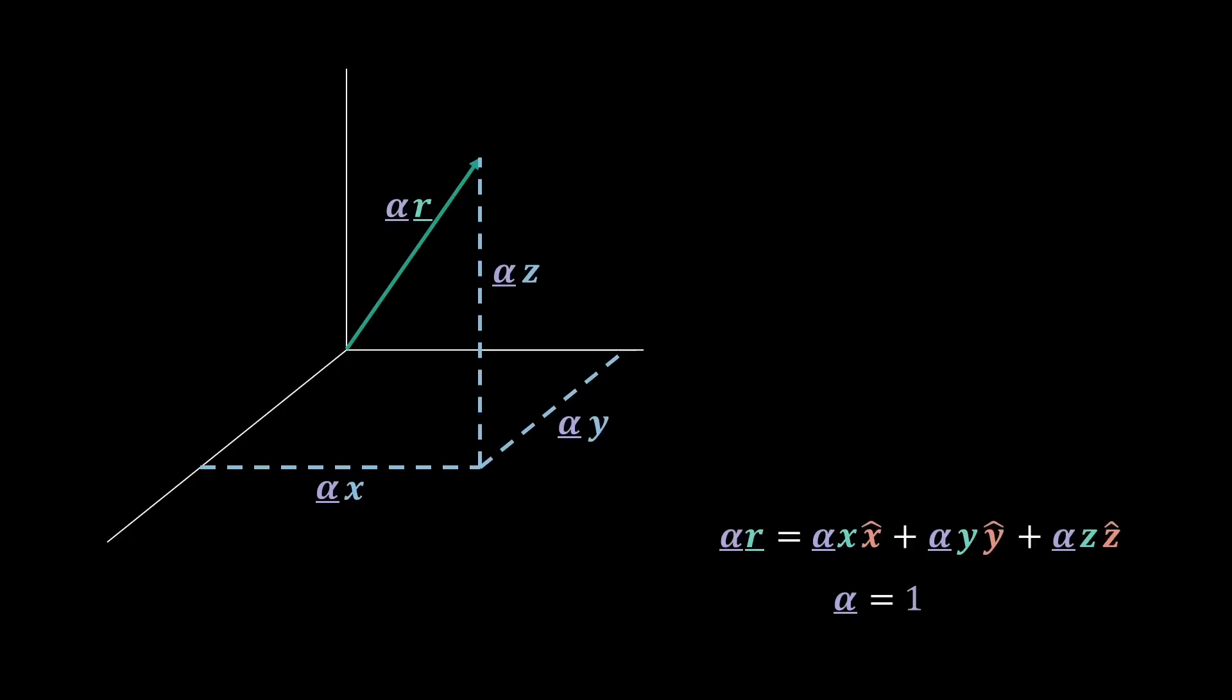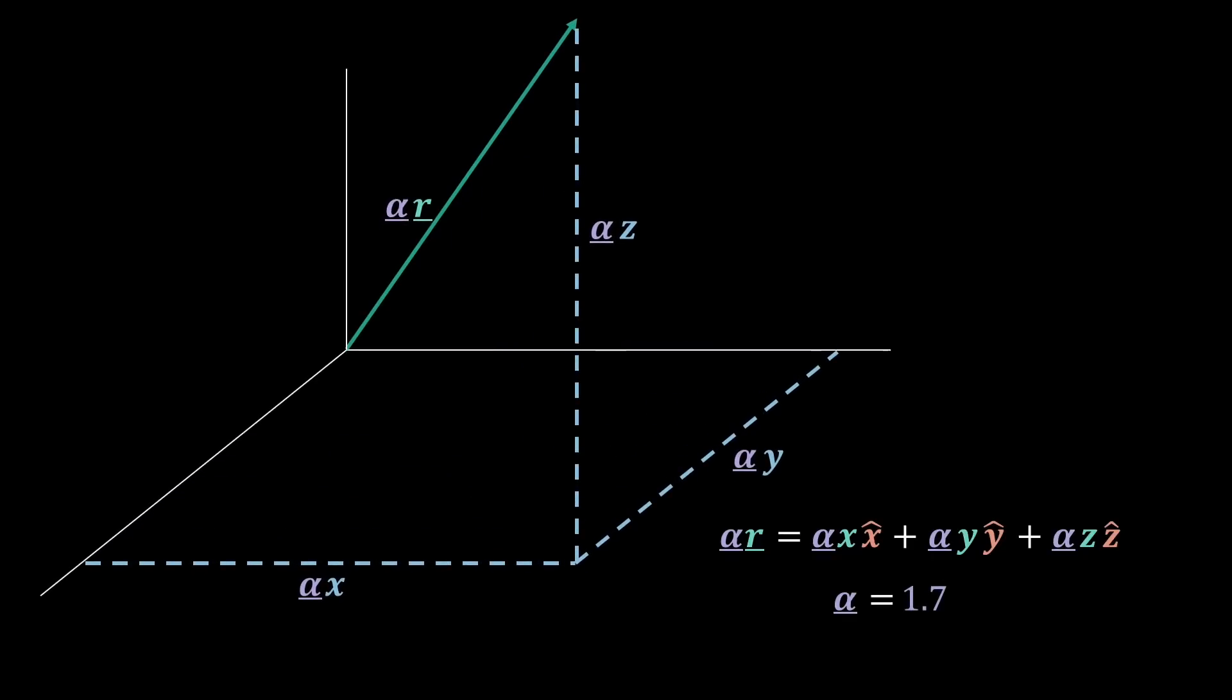Hence, for alpha equals 1, this is just the same vector R. Or if we multiply by 0.5, we see that the vector halves, or if we times by 1.7, it grows.